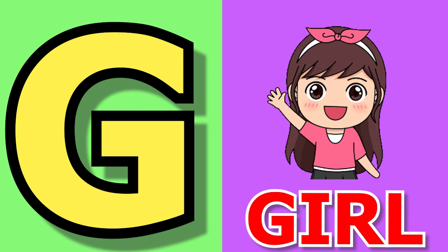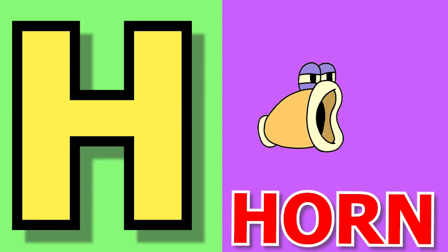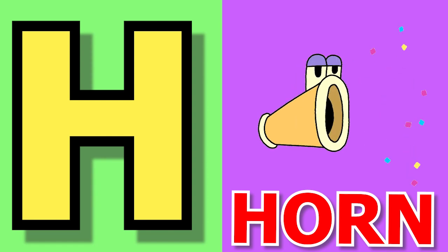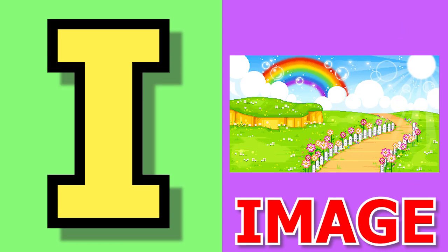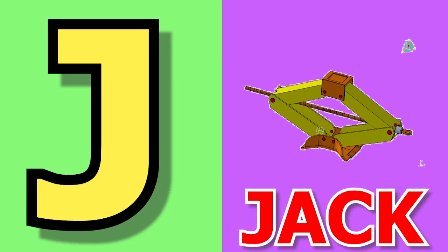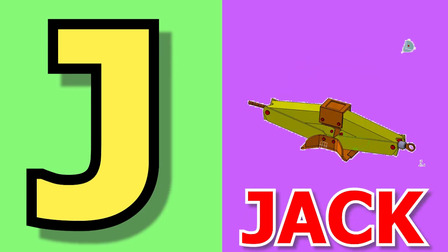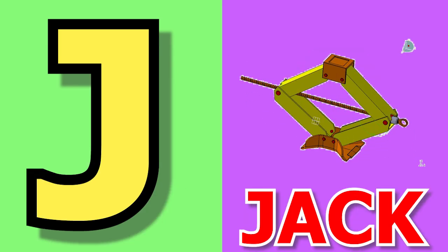G for girl, girl means ladki. H for horn, horn means horn. I for image, image means chitra. J for jack, jack means jack.